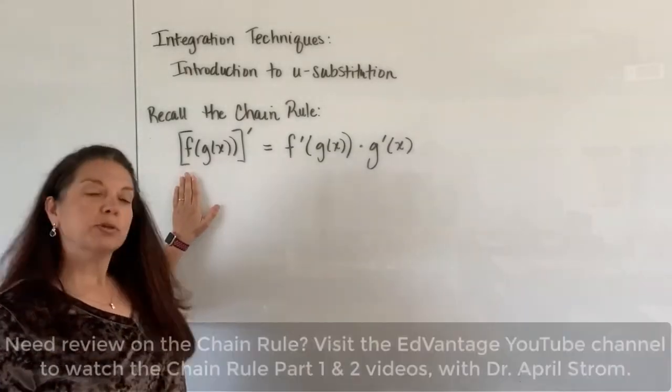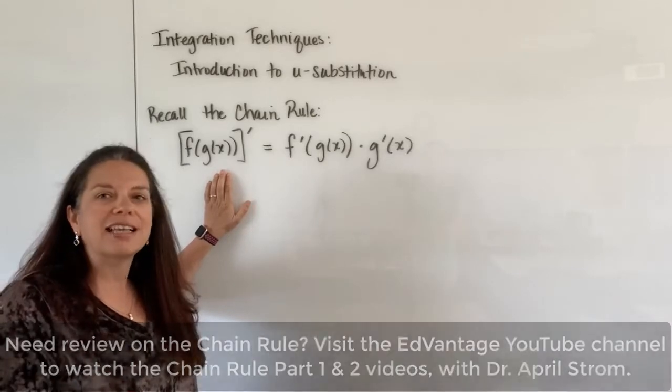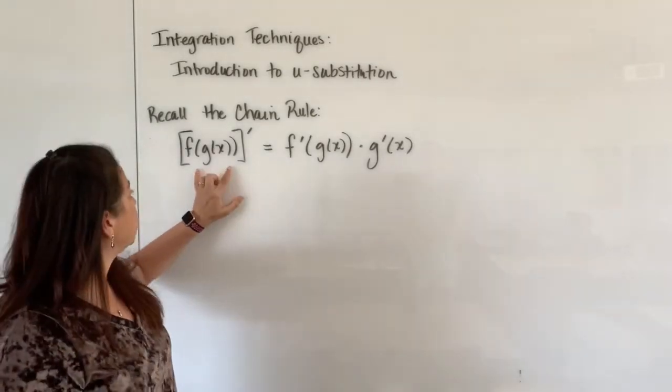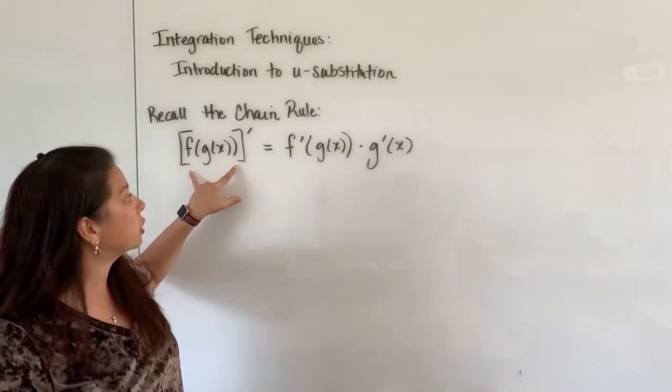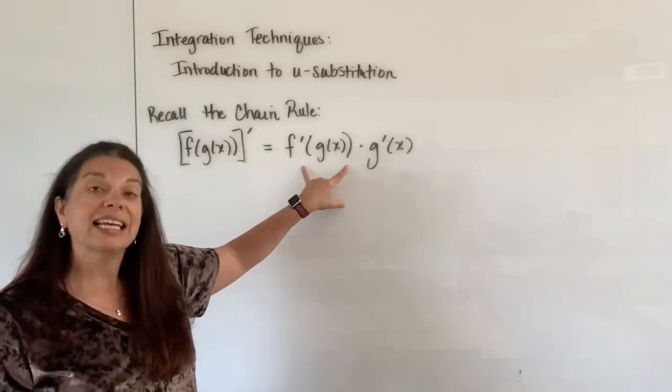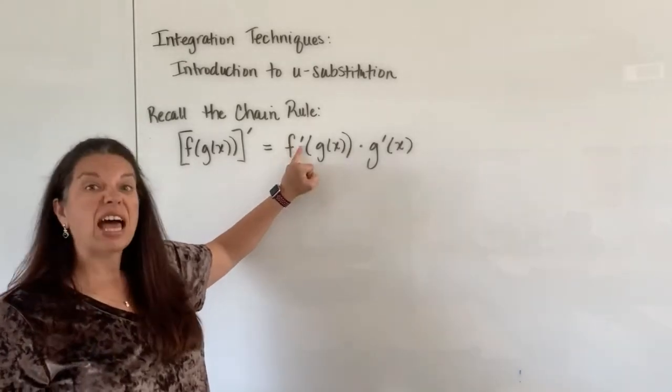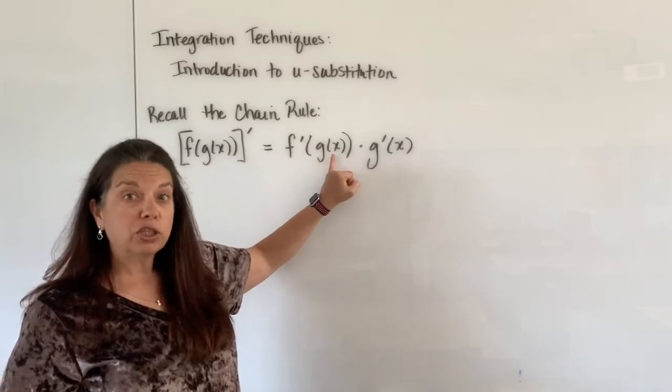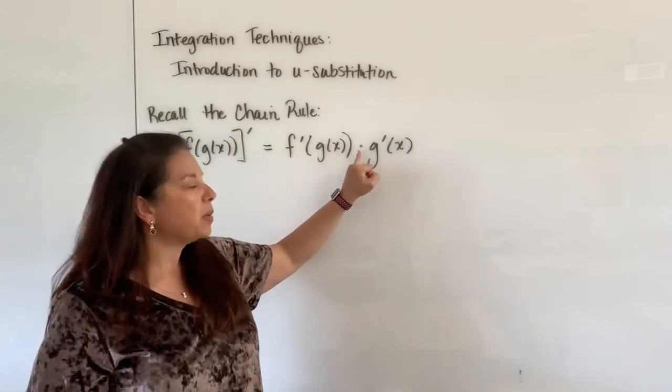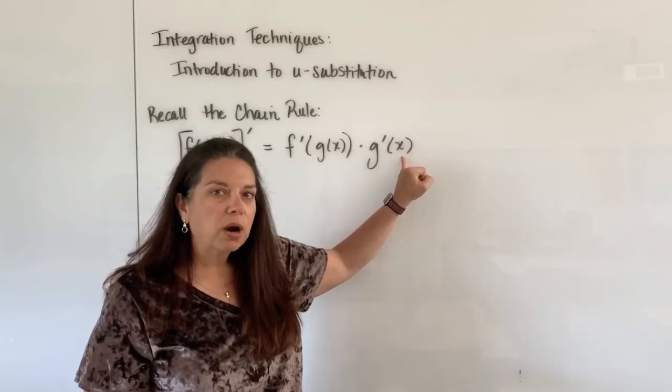So just as a reminder, the chain rule says if you have a composition of functions such as f of g of x, like we do here, and you wish to take the derivative of that composition of functions, well what we're going to end up with in terms of the derivative is the derivative of that outside function f keeping the inside function the same, g of x, then being multiplied by the derivative of that inside function, so g prime of x.